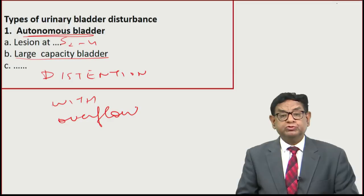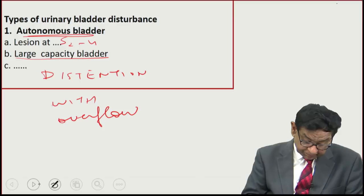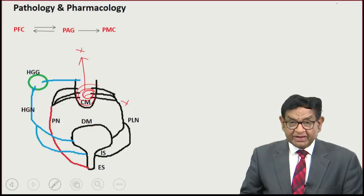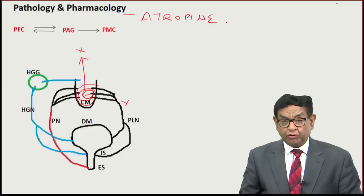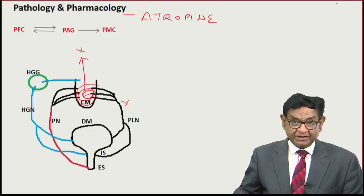The pelvic nerve is very important for micturition. In pharmacology, this explains why atropine or atropine-like drugs — any anticholinergic drug — cause urinary retention. This is a commonly asked question in exams, and the answer lies in the basic physiology and pharmacology of the pelvic nerve.